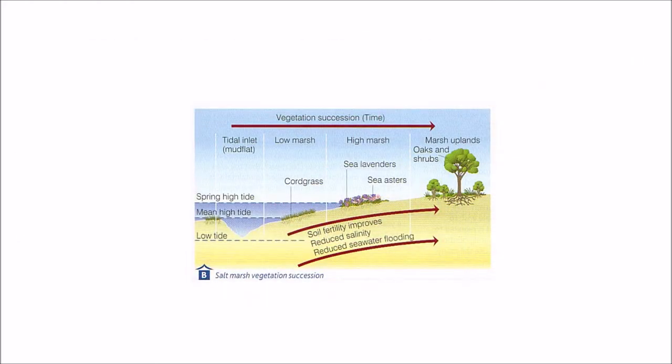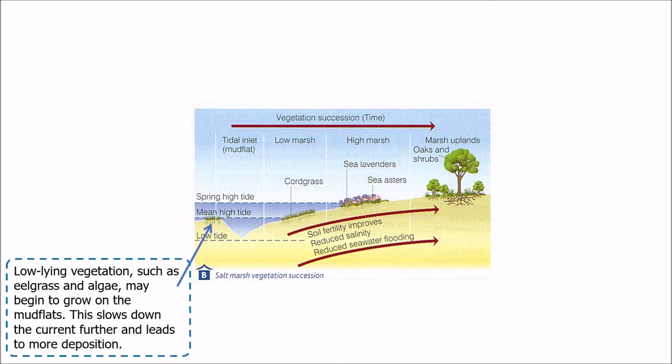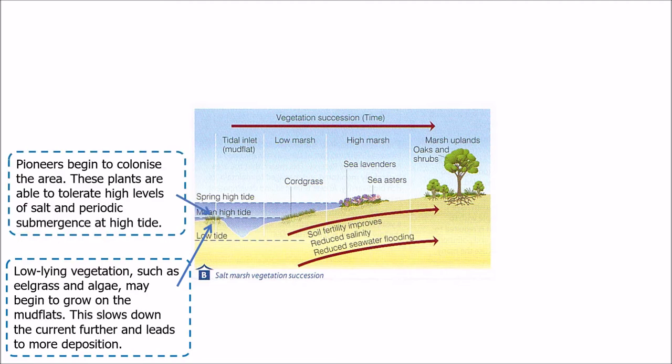So we're going to look at the process which turns a mudflat into a salt marsh. The first thing that happens is that low-lying vegetation such as eel grass or algae begins to grow on the mudflats. That vegetation is important because, although growing under the water, it helps to slow the speed of the water down, which in turn encourages more deposition. As the level of mud rises, pioneer species begin to colonise the area — another similarity with sand dune succession.